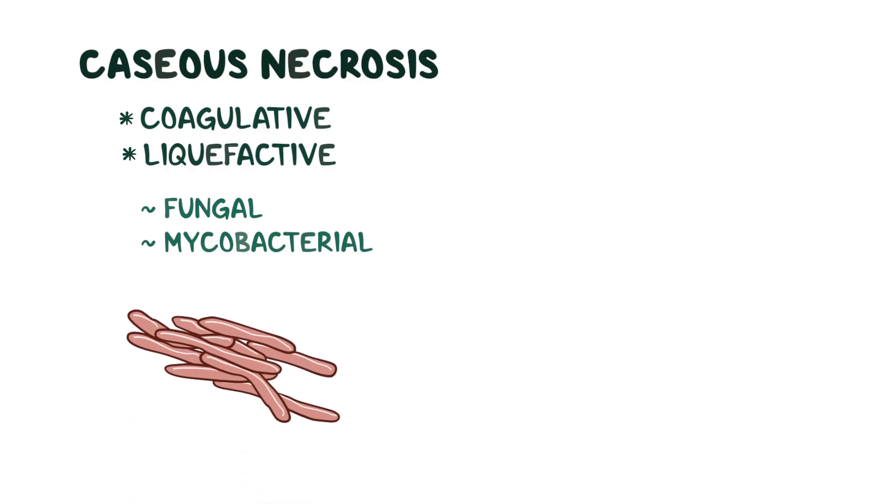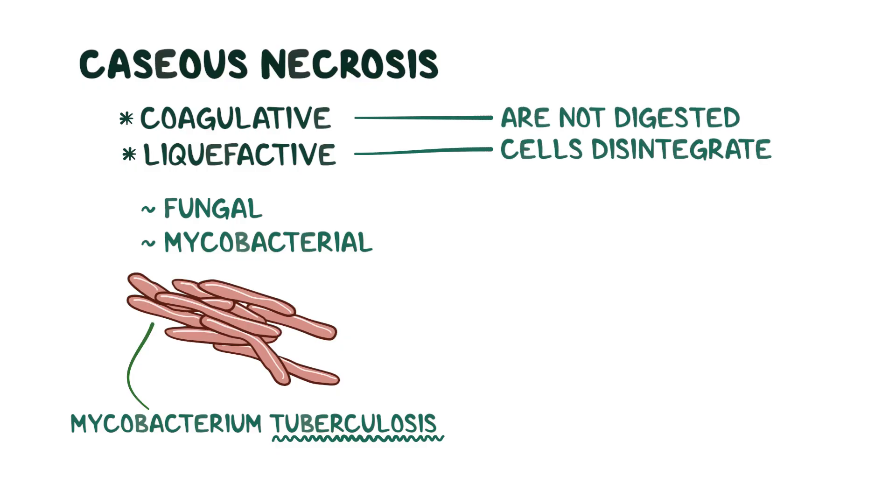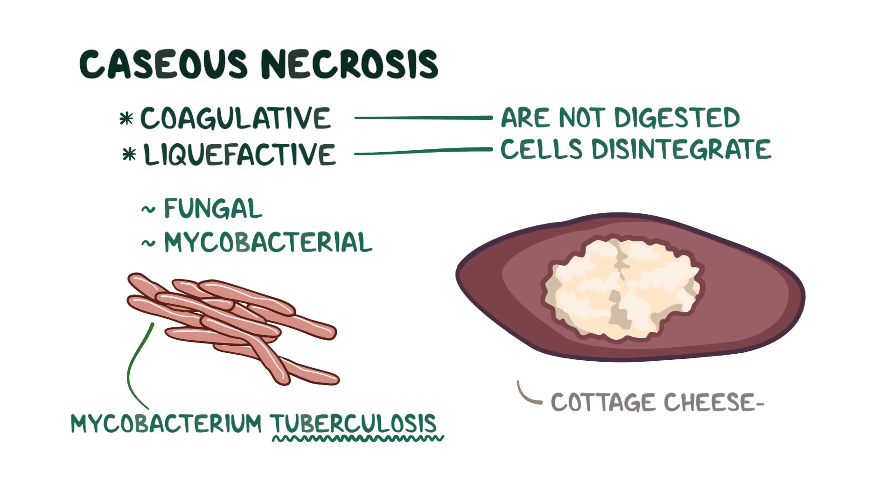Next, there's caseous necrosis, and it's a bit of a mix between coagulative and liquefactive necrosis. Typically, it's the result of a fungal or mycobacterial infection, classically mycobacterium tuberculosis, which causes tuberculosis. The dead cells disintegrate, but are not fully digested, which leave the tissue with a cottage cheese consistency.